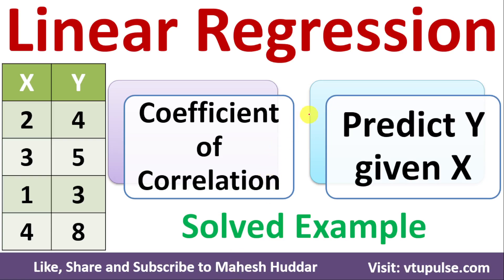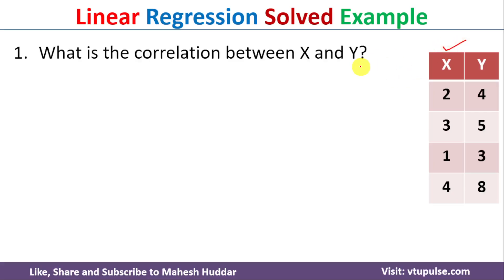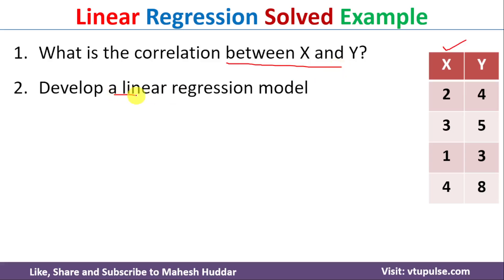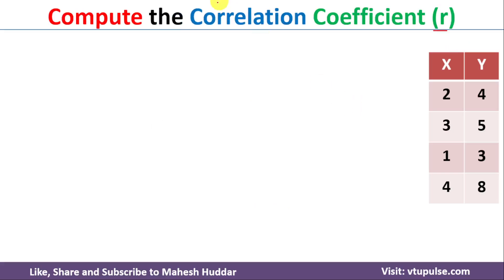Welcome back. In this video I will discuss how to find the correlation between the dependent variable y and independent variable x, and predict the value of y given the value of x using the linear regression algorithm. This is the given dataset. First, we need to find the correlation between x and y, then develop a linear regression model y = b0 + b1·x, and then find the y value when x = 2.5. We will start by computing the correlation coefficient r.